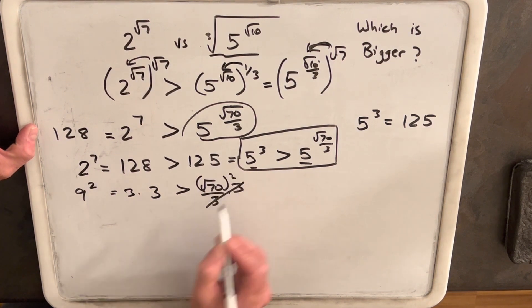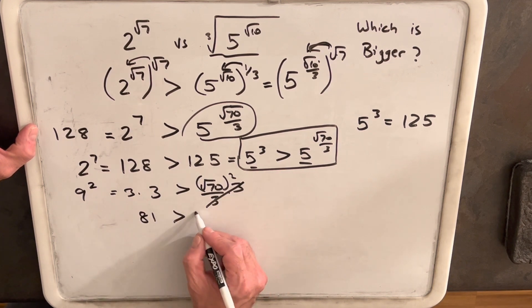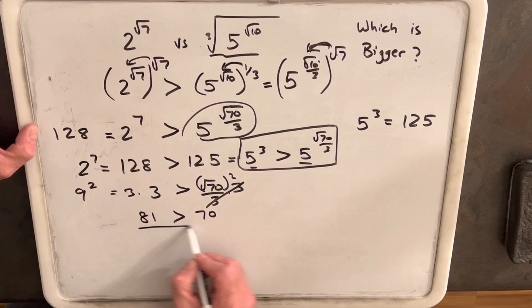we'll see on the left side we have 9 squared, which is 81. And that's going to be greater than square root of 70 squared is just 70. So that's going to be a true statement right there.